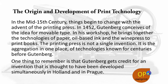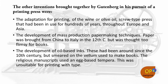The origin and development of print technology: in the mid-15th century, things begin to change with the advent of the printing press. In 1415, Gutenberg conceives the idea for movable type in his workshop, bringing together the technology of paper, oil-based ink, and the wine press to print books. The printing press is not a single invention — it is the aggregation in one place of technologies known for centuries before Gutenberg. One thing to remember is that Gutenberg gets credit for an invention thought to have been developed simultaneously in Holland and in Prague.